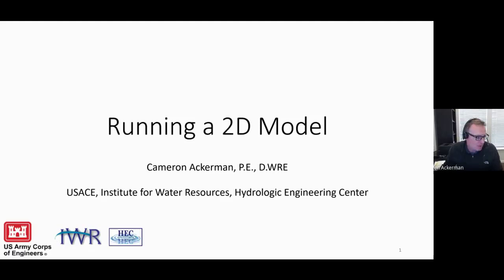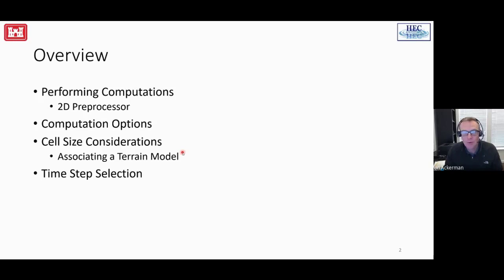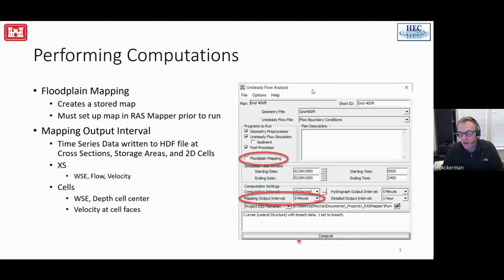We'll talk about some of the things you already think about when doing 1D modeling but perhaps not for 2D modeling. What are we going to talk about? We'll talk about what happens when we hit the go button, what computations occur, computation options and tolerances, grid cell size considerations, and how that affects our time step selection.